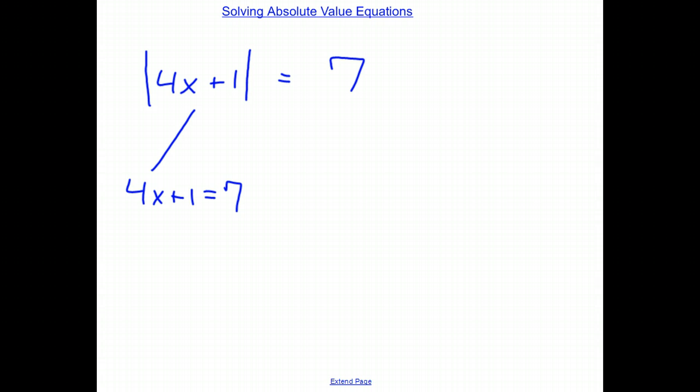So I can either have positive 7, or in the second way I break it up, I could have 4x plus 1 equaling negative 7. I need whatever is in the absolute values to be either positive 7 or negative 7 in order to solve this problem. So once I've broken this down, this is basic algebra.